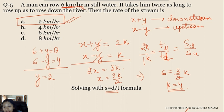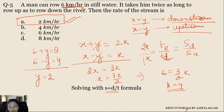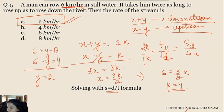No new formula is needed. x+y is downstream speed, x-y is upstream speed. If the time ratio is 2:1, the speed ratio becomes 1:2. So x+y = 2k and x-y = k. With x given as 6, find k = 4, and therefore y = 2. Simple understanding of the concept — nothing else.